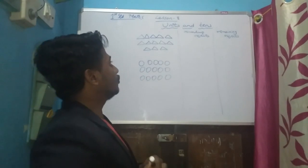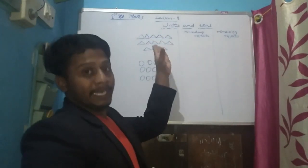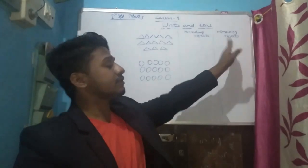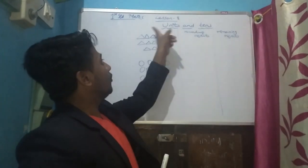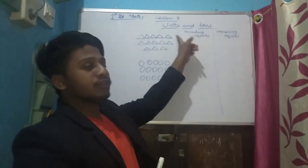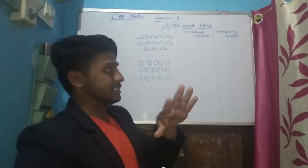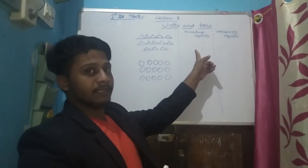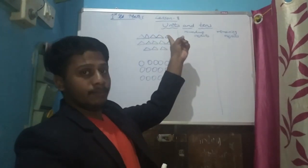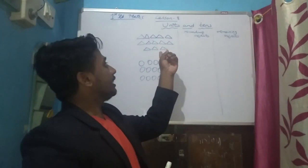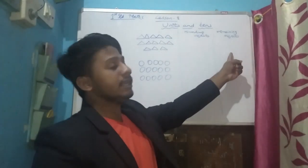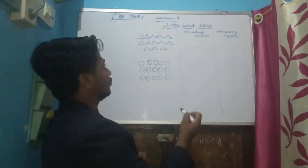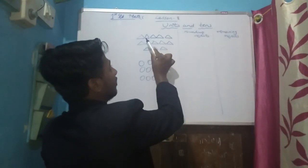Here you have to round up ten objects and write the remaining objects. The rounded-up objects number you write here, and after rounding up, the remaining objects number will be written on this side.